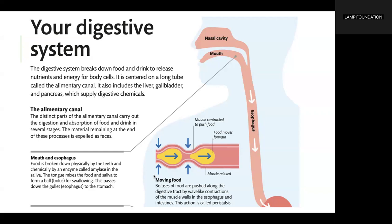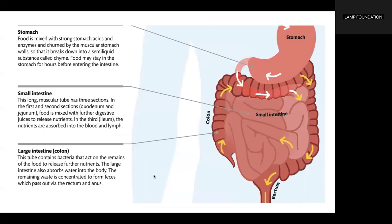Boluses of food are pushed along the digestive tract by wave-like contractions of the muscle walls in the esophagus and intestines — this action is called peristalsis. Food is mixed with strong stomach acids and enzymes and churned by the muscular stomach walls, breaking it down into a semi-liquid substance called chyme. Food may stay in the stomach for hours before entering the intestine.